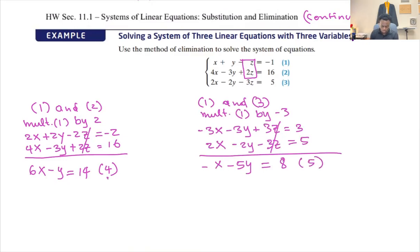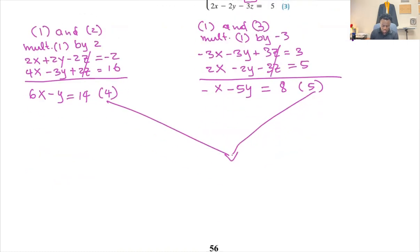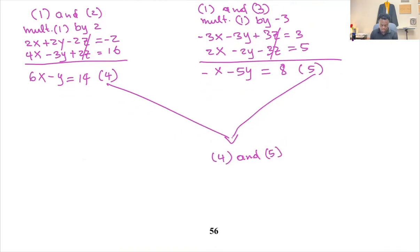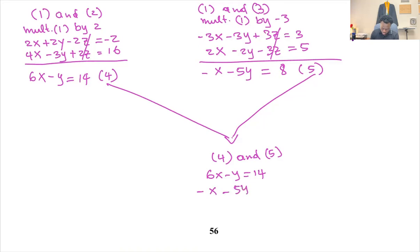Now let me match equations four and five. That will basically be a system of two equations in two variables, x and y. So we can solve for one of them. Equation four is six x minus y equals 14, and equation five is negative x minus five y equals eight.